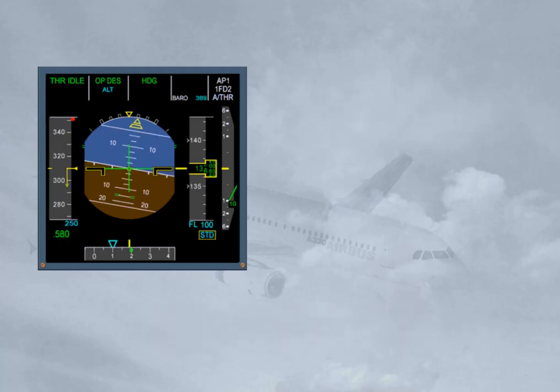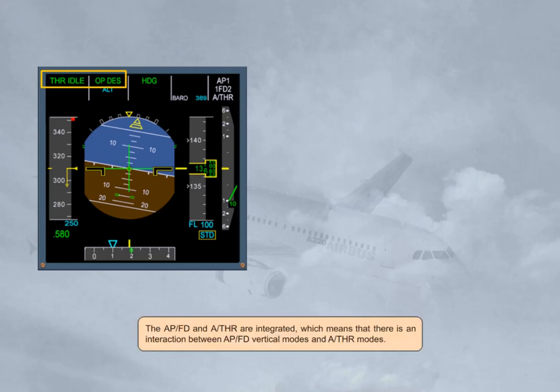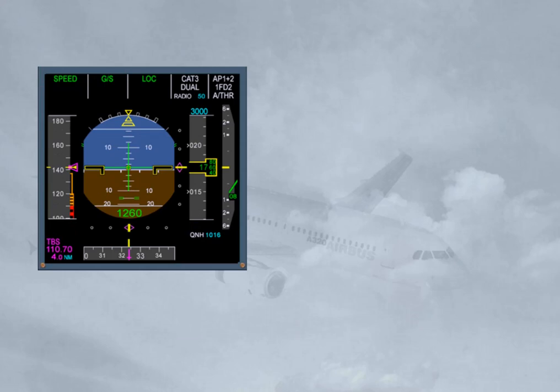The autopilot flight director and autothrust are integrated, which means that there is an interaction between autopilot flight director vertical modes and autothrust modes. When the autopilot flight director pitch or vertical mode controls a vertical trajectory, the autothrust controls the speed or Mach. Note: if both autopilot flight directors are off, the autothrust controls the speed.